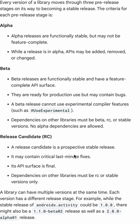In the release candidate stage, it is almost a final stable release — features are pretty much stable and it may contain last-minute fixes, but the API surface is final. A stable release of a library can be a stable version, and you can also have beta and release candidate versions at the same time.